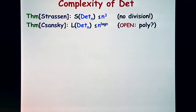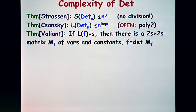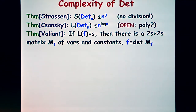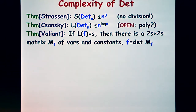The completeness statement I want to tell you about is by Valiant. It says that if you have any formula computing some polynomial — a formula of size S — then that polynomial can be captured as the determinant of a matrix that is roughly S by S, with only variables and constants in its entries. Any polynomial represented by some formula can be represented as a determinant. This is the reason you see determinants all over the place: they are as useful as formulas, sometimes more convenient to work with.